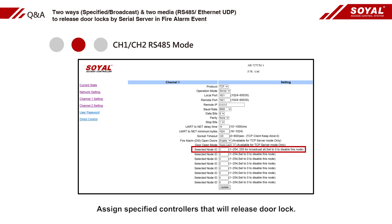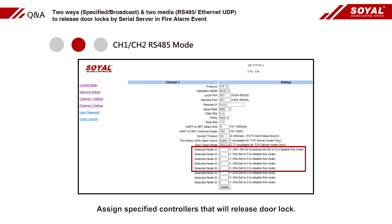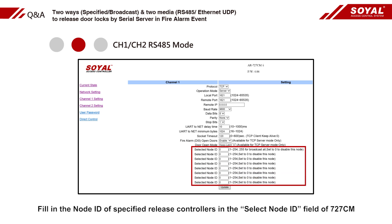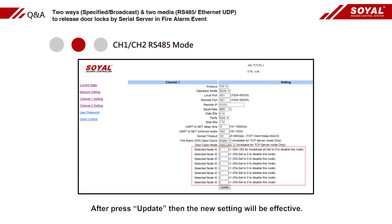Assign specified controllers that will release door lock. Fill in the node ID of specified released controllers in the select node ID field of 727CN. After pressing Update, the new setting will be effective.